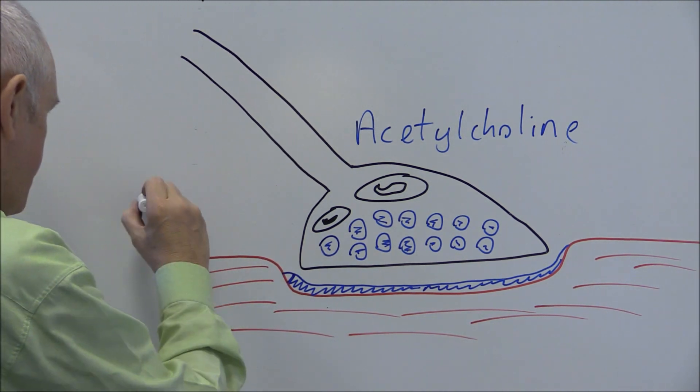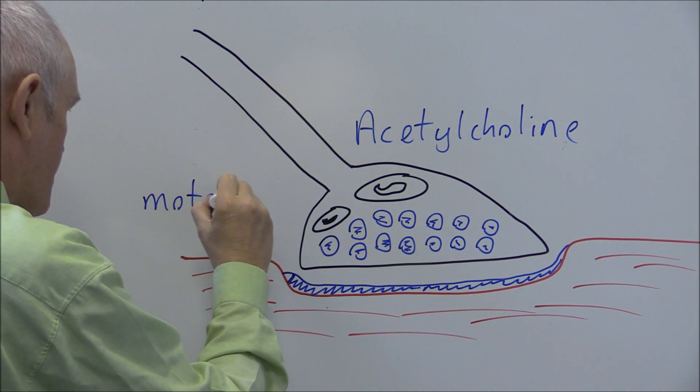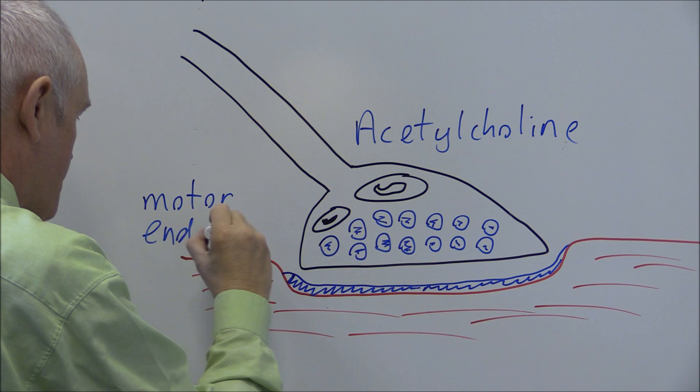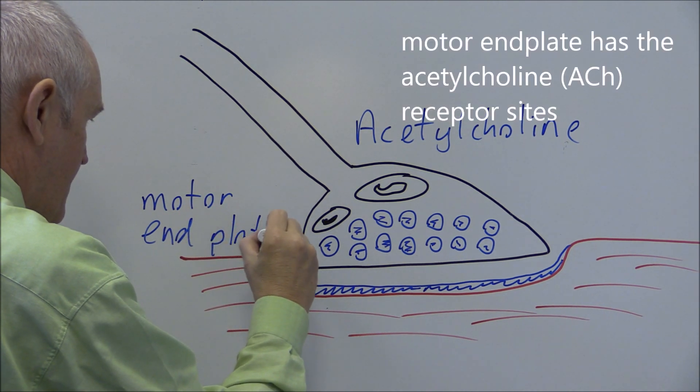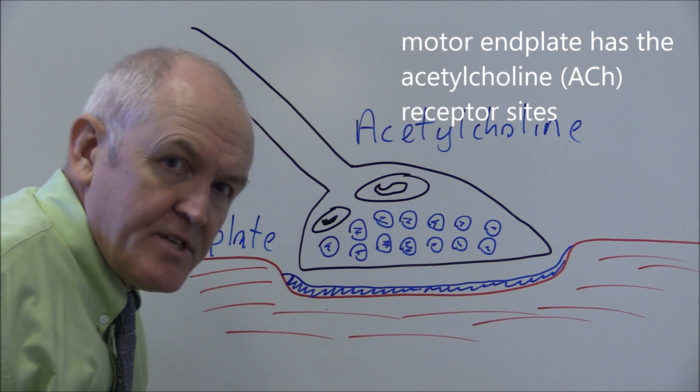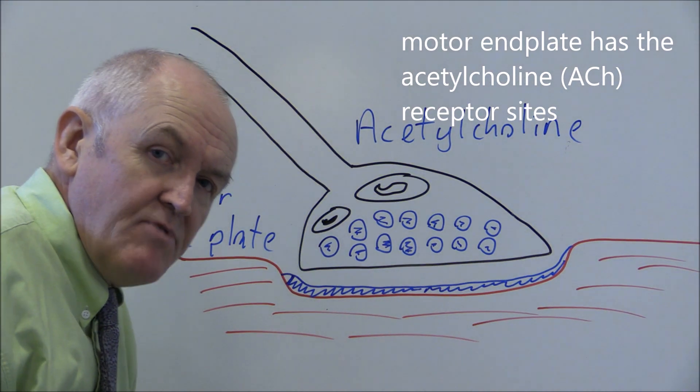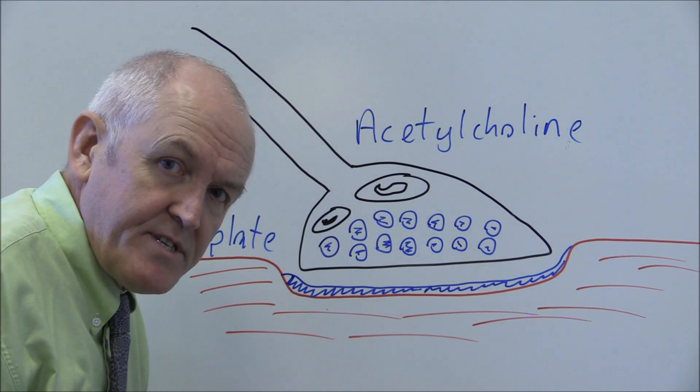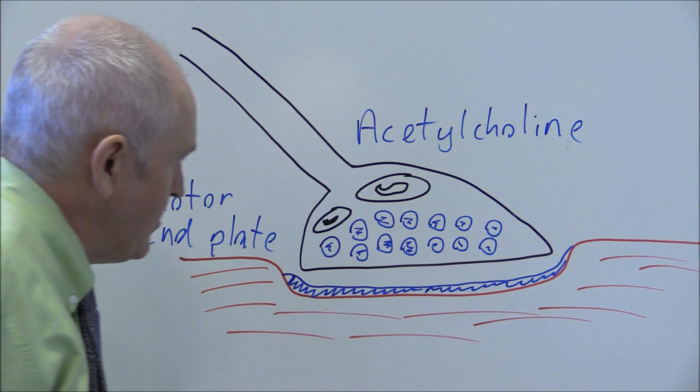So that's the motor end plate and this motor end plate is important because this is what contains the receptor molecules or the receptor sites for the acetylcholine.